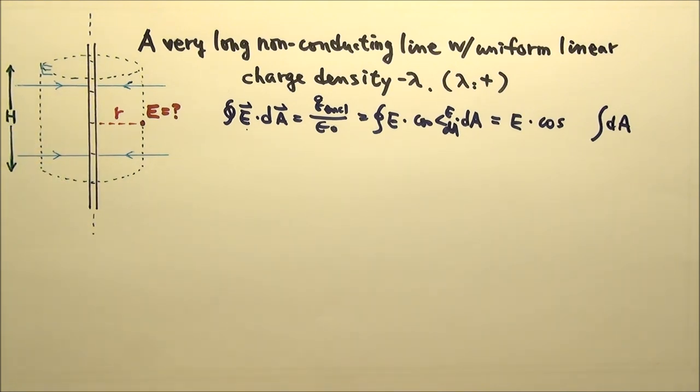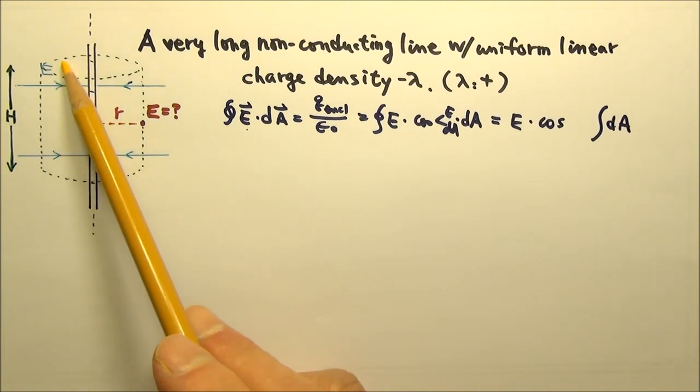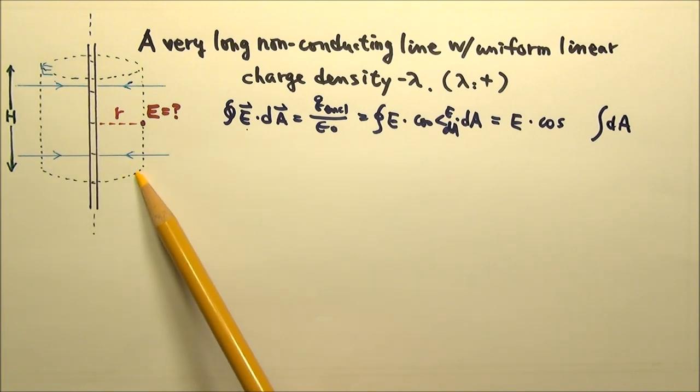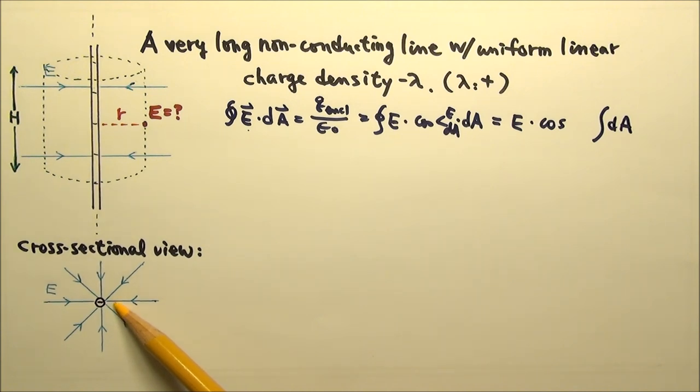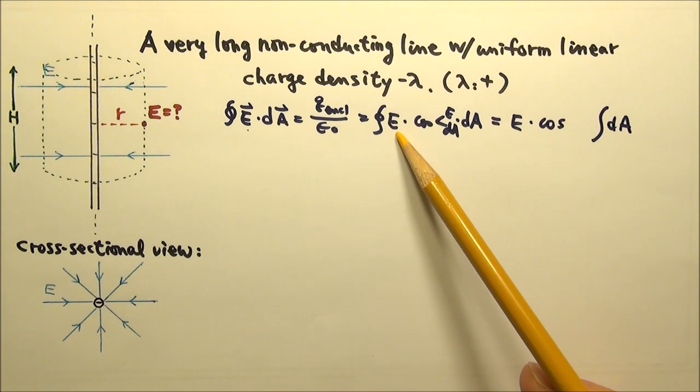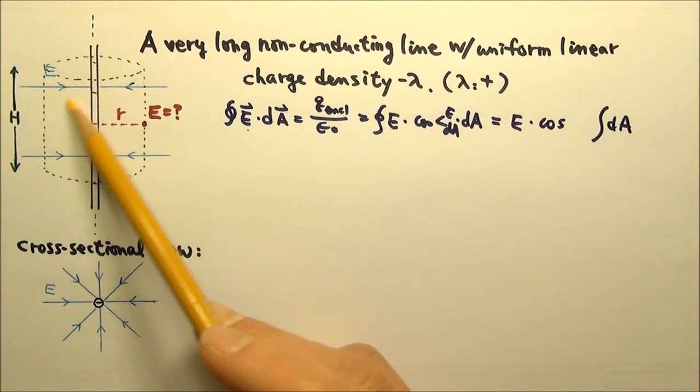Based on cylindrical symmetry, the electric field does have the same magnitude everywhere on the curved part of the surface. However, a closed Gaussian surface would also include the top and bottom of the cylinder. Since the electric field lines spread out like this, as shown in this cross-sectional view, the field line density is higher closer to the center, which means the electric field is stronger closer to the center. So E does not have the same magnitude everywhere on the Gaussian surface.